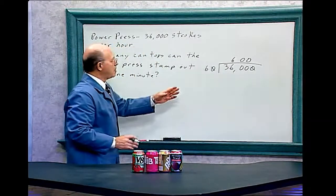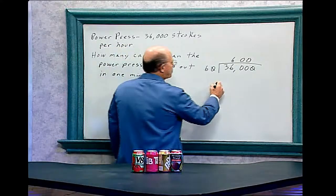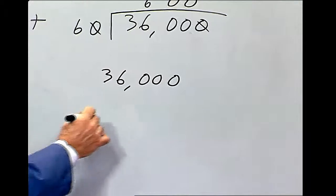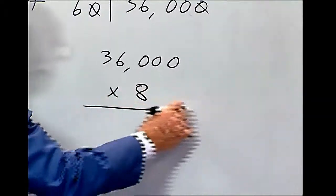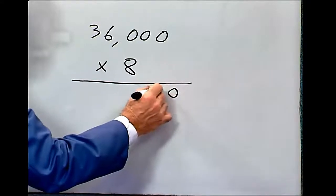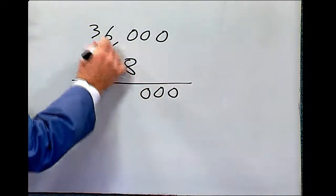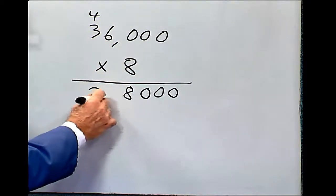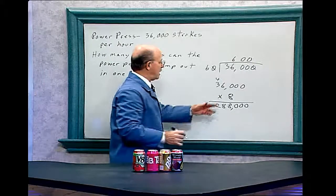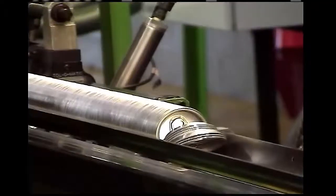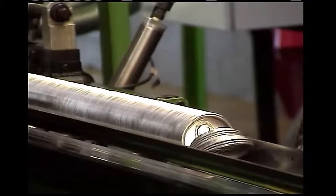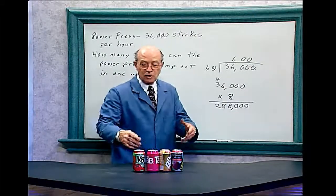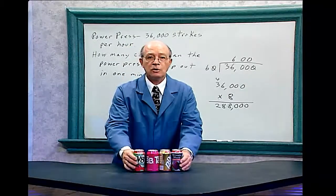Now I want to also figure, if it could stamp out 36,000 in one hour, in 8 hours, times 8. Let's figure out how many it could stamp out. 0, 0, 0, 8 times 6 is 48. 8, 16, 24, 28. So in an 8 hour day of that power press runs continuously, it could stamp out 288,000 can tops. And you can imagine how many soda can tops there are.